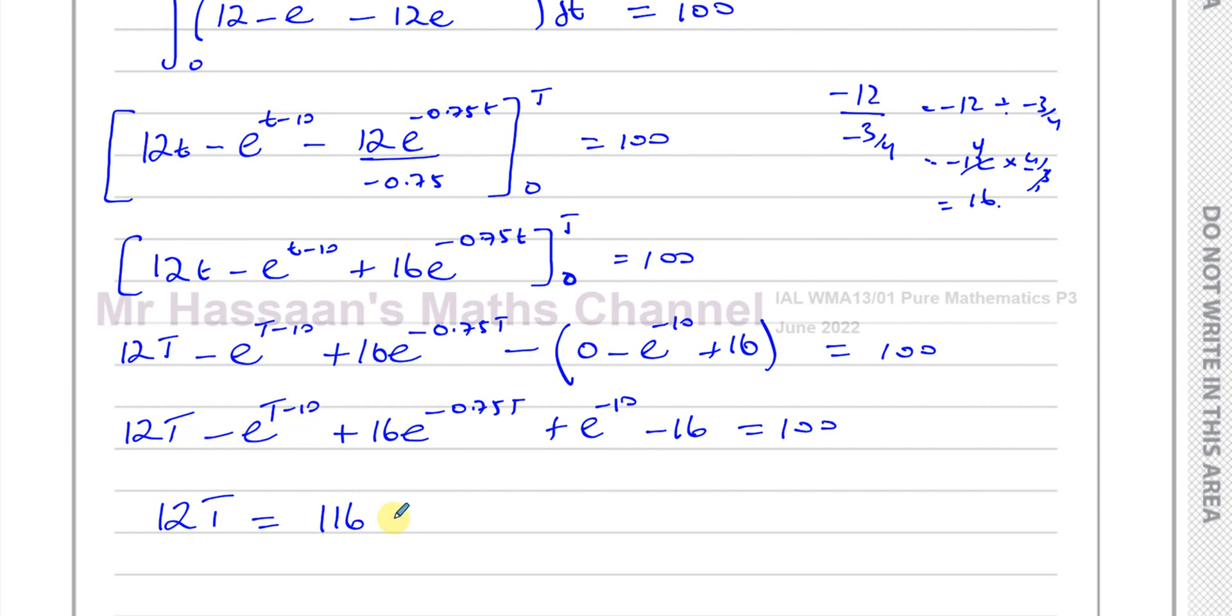I'm going to add 16 to 100, that'll be 116. Then I'm going to add this to both sides: plus e to the power of t minus 10. And I've got to get rid of this, so I'll subtract 16e to the power of negative 0.75t and take away e to the power of negative 10 from both sides.